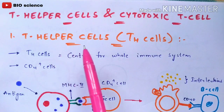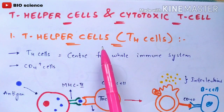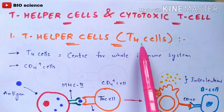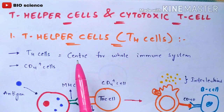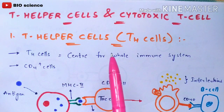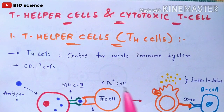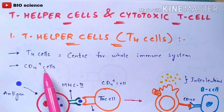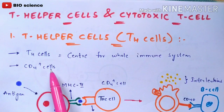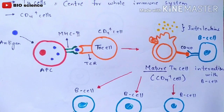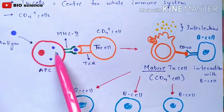First, let us discuss T helper cells. T helper cells are also called TH cells, and they act as the center of the whole immune system. These TH cells are also called CD4 plus cells. Now let us see how the function is performed by T helper cells.